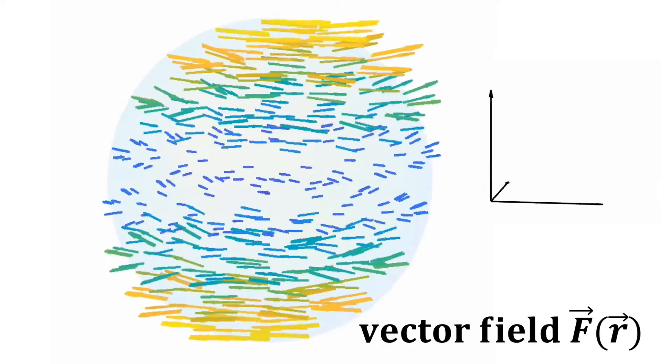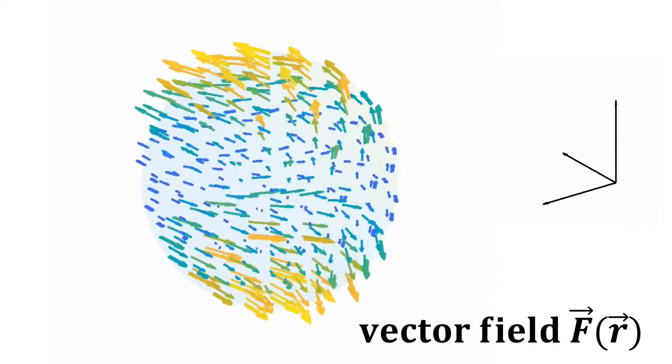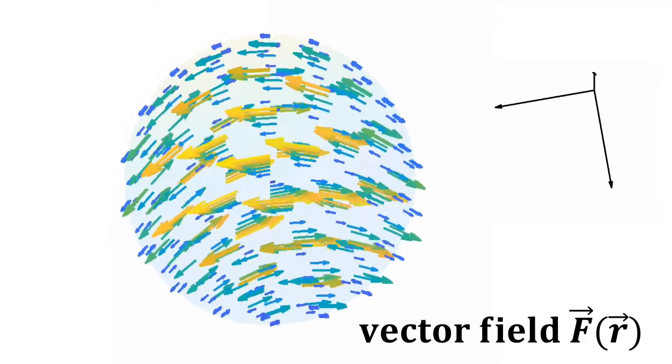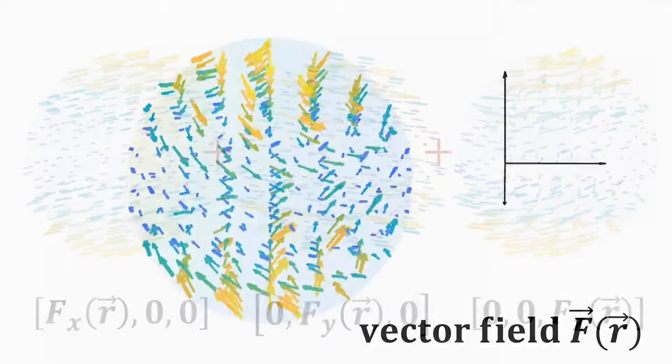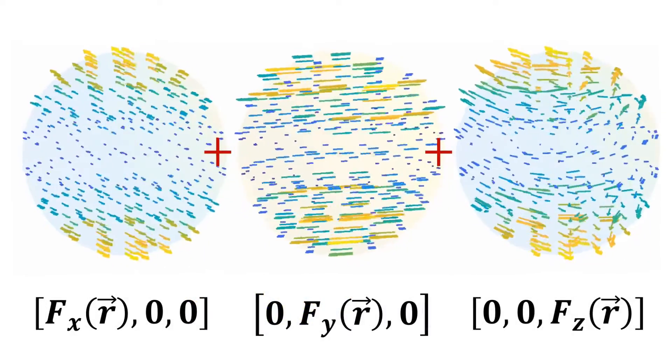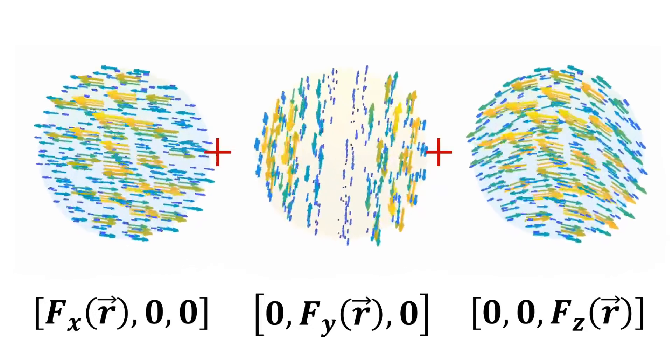One could project the vectors onto the orthogonal axes and visualize these component resolved vector fields. Such visualization would be useful when depicting streamlined flow.